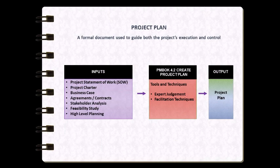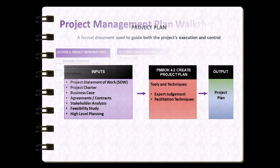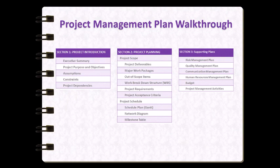Now let's take a look at the project plan template we'll be using for this assignment. It's divided into three logical sections. The first section introduces the project to the reader — always assume the reader is unfamiliar with the project. The second section covers the actual planning: the work breakdown structure, scope, requirements, acceptance criteria, and schedules. The third section addresses the supporting plans needed on your project — risk, quality, communication, and other supporting plans.